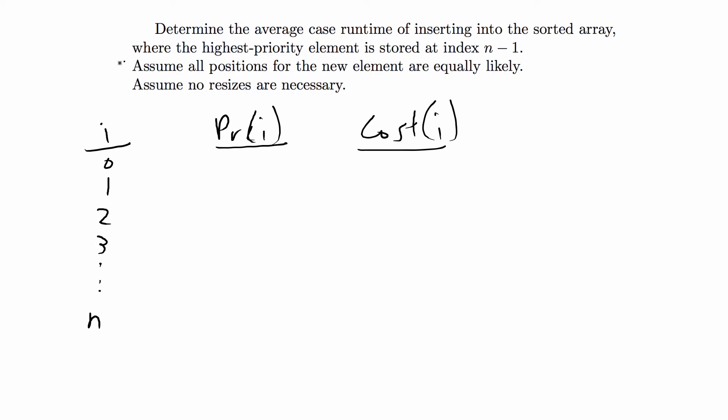For the probability of i, we're given that all the new positions would be equally likely. If we have an array of n elements and we're adding to that array, the probability would be 1 over n. Since we're adding an element every time we add to the array, the probability is going to be 1 over n plus 1. This will be true for every value at any position.